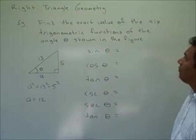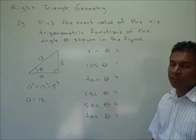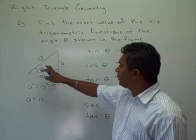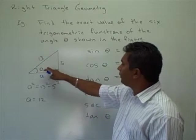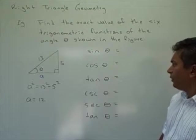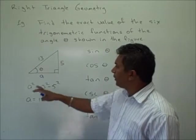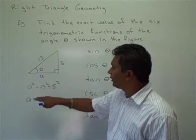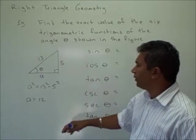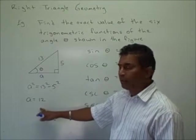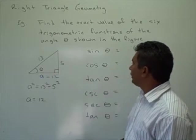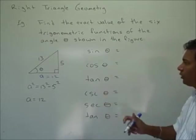Now let's look at an example of finding the six trigonometric functions given a right triangle. Here we're given a right triangle with hypotenuse 13; the opposite side is 5, which is across from theta. Using the Pythagorean theorem, the adjacent is equal to the square root of the hypotenuse squared minus the opposite squared, so the adjacent is equal to 12.